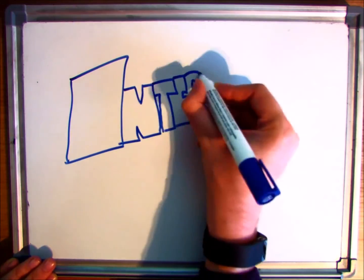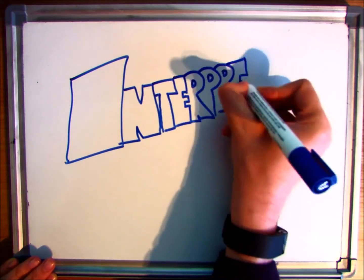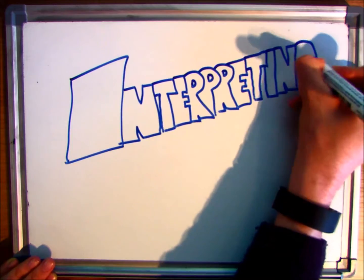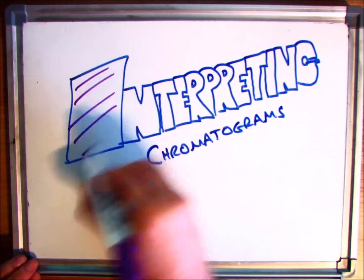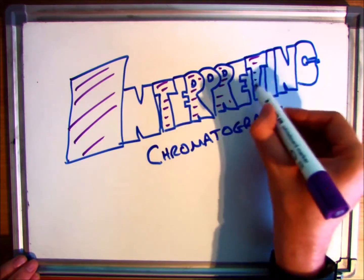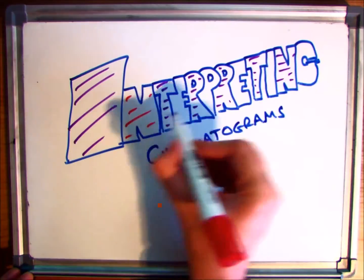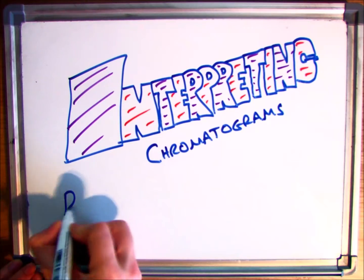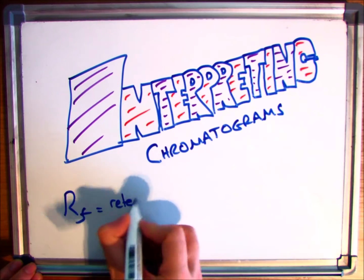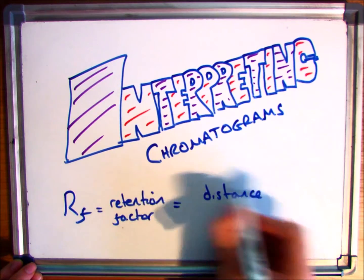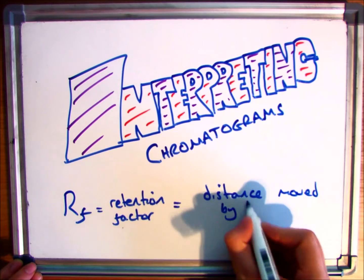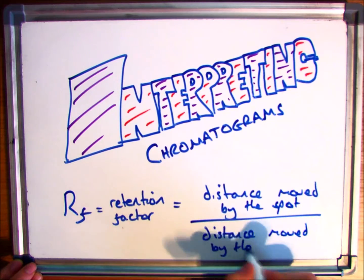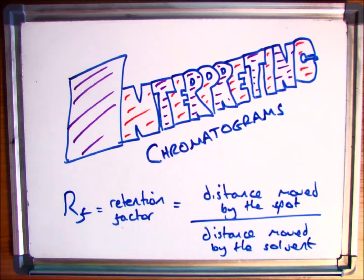Welcome to this video which is going to focus on interpreting chromatograms, looking mainly at how you can calculate the retention factor and what information that gives you. The calculation for retention factor is the distance moved by the spot divided by the distance moved by the solvent.